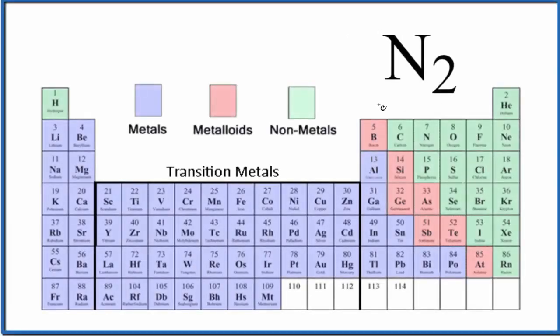Let's write the chemical name for N2. So nitrogen on the periodic table right here, that's a non-metal. So we have these two nitrogen atoms bonded together, so we have a molecular compound.